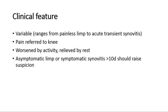The clinical presentation is variable, which can range from a painless limping of the leg to an acute transient synovitis. If children do have pain, it is often referred to the knee, and the pain tends to be worsened by activity and relieved by rest. Children around 4 to 9 years old with asymptomatic limping or symptomatic synovitis for more than 10 days should raise suspicion of Perthes disease.